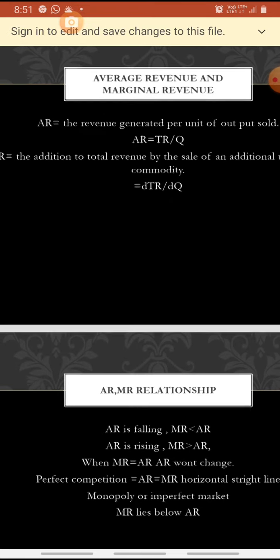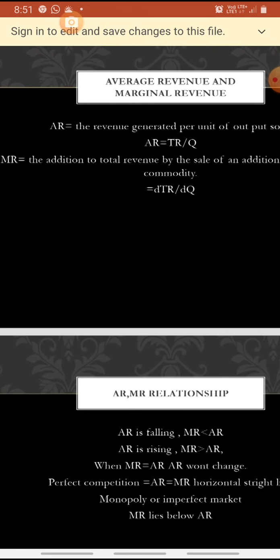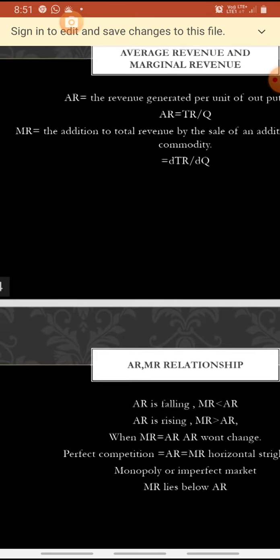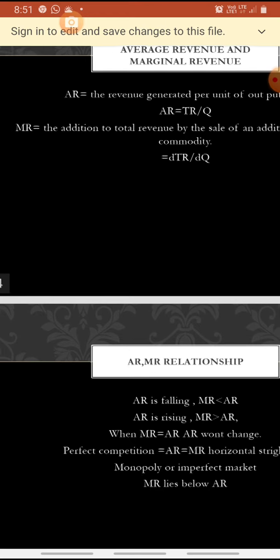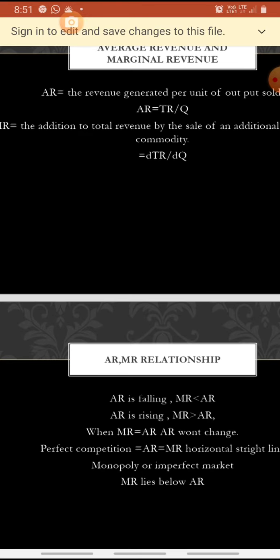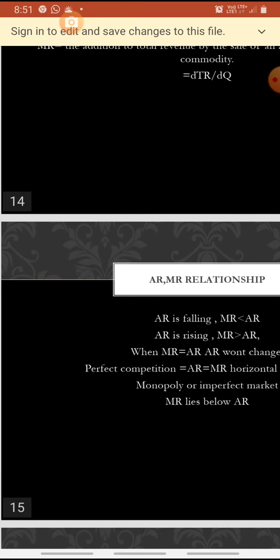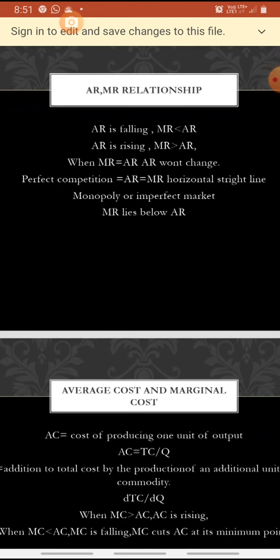Average revenue is the total revenue generated per unit of output sold: TR by Q. Marginal revenue is the addition to total revenue by the sale of an additional unit: dTR by dQ. In perfect competition, AR, MR, and price are the same. AR is falling when MR is less than AR; AR is rising when MR is greater than AR; when AR equals MR, AR won't change. In perfect competition it is a horizontal straight line; in monopoly or imperfect competition, MR lies below AR.